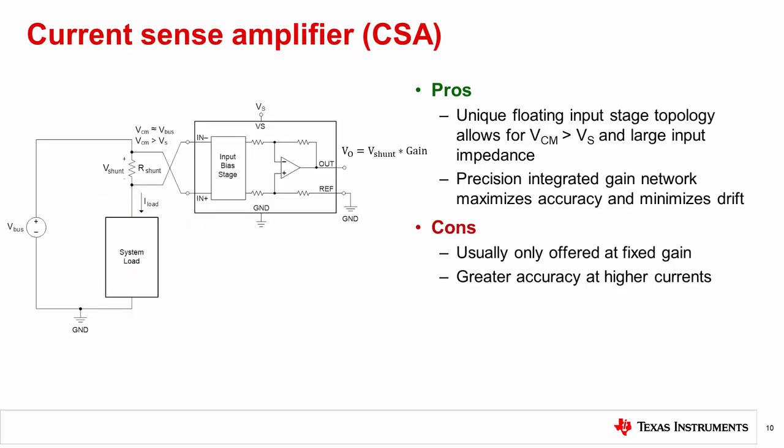Current sense amplifiers, also called current shunt amplifiers or current shunt monitors, are specialized amplifiers with a unique input stage that enables the common mode voltage to be much higher than the supply voltage. In addition, they integrate a high precision, low drift gain network that maximizes measurement accuracy. The input structure is such that it limits the use cases where the shunt current is greater than tens of microamps.